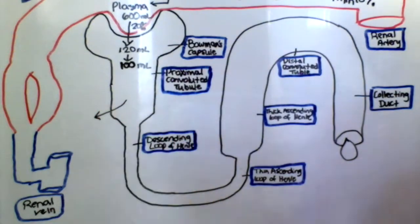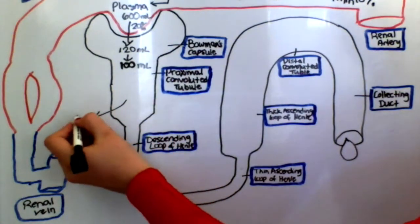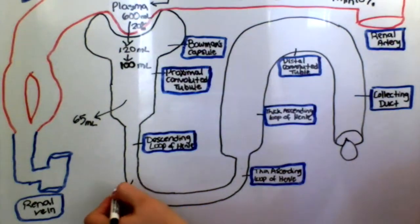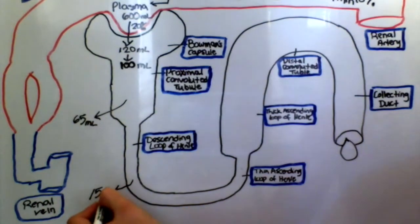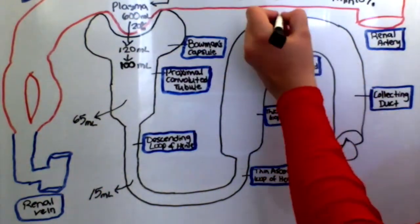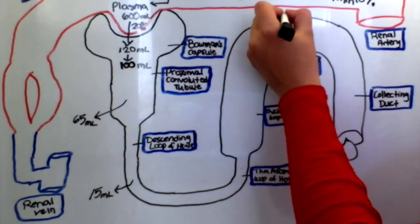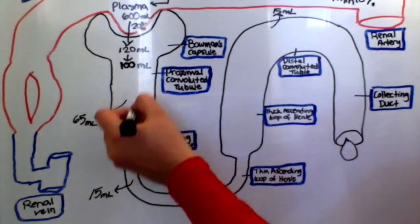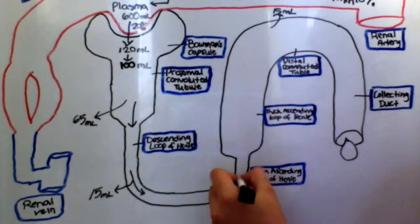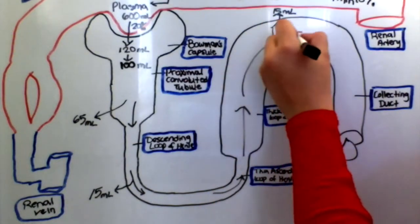Of the hundred milliliters of filtrate, sixty-five milliliters is reabsorbed in the proximal convoluted tubule. Fifteen milliliters is reabsorbed at the descending loop of Henle, and another fifteen milliliters is reabsorbed at the distal convoluted tubule, leaving only five milliliters to be excreted as urine.